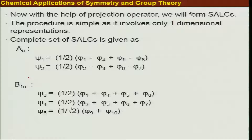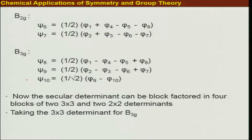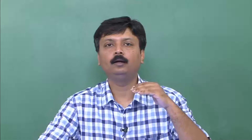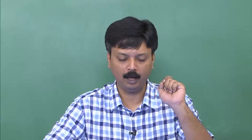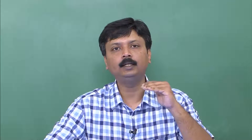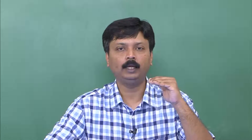There are certain irreducible representations occurring. For example, AU occurs two times, B1U occurs three times, B3G occurs three times, while B2G occurs two times. That means I will have a total of 10 molecular orbitals given by the SALCs we formed, and these 10 SALCs will have their own energies.